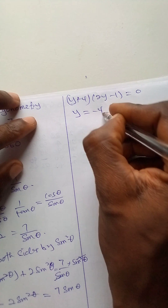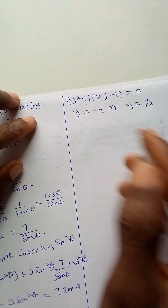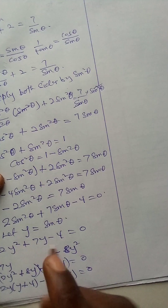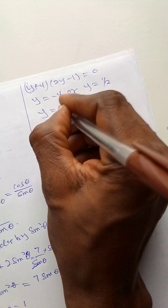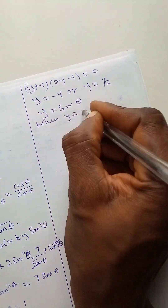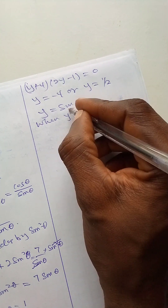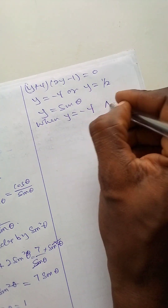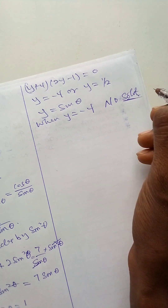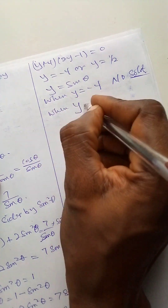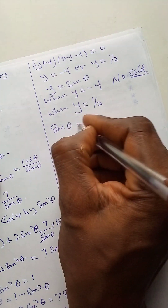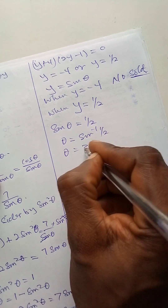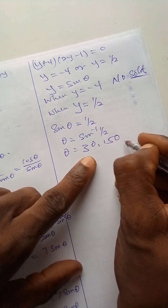So y is equal to minus 4 or y is equal to 1 over 2. But these are not the final solutions — let us remember that we made the substitution y equals sine theta. When y is minus 4, there is no solution because sine theta ranges from minus 1 to plus 1. When y is 1 over 2, sine theta equals 1 over 2, and theta is the arcsine of 1 over 2, which is 30 degrees. Also, 150 degrees is also a solution. So these are the solutions.